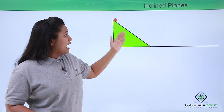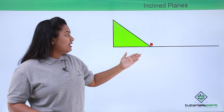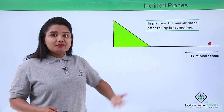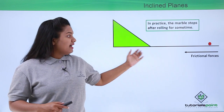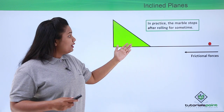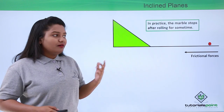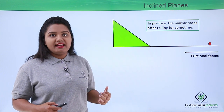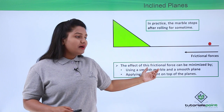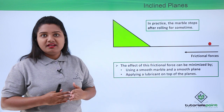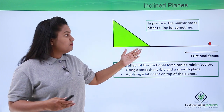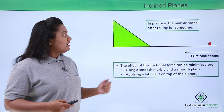In practice, the marble rolls down and then rolls for a while before coming to a stop, because of the extra forces that come into play when it starts moving. This is the frictional force, which depends on the area of contact of the two surfaces. We can reduce this effect by modifying the surfaces — using a smooth plane or making the plane and marble smoother by applying grease or any other kind of lubricant.